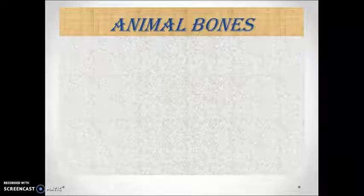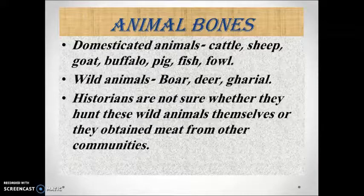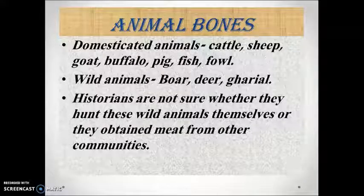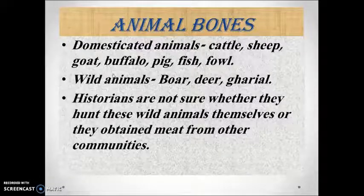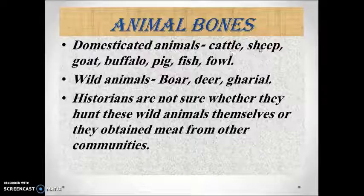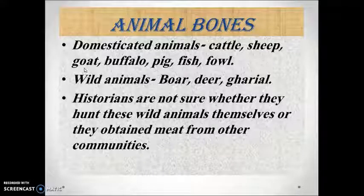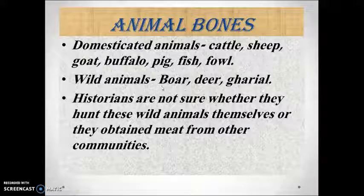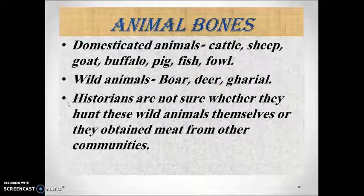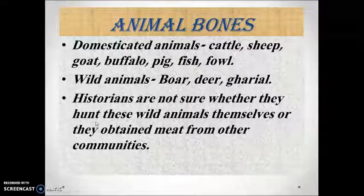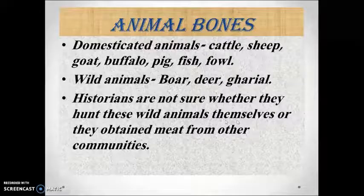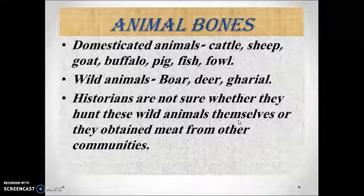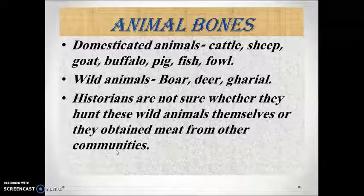On the basis of findings of animal bones, we can divide them into two broad categories: domesticated animals and wild animals. Under domesticated animals, we have findings of cattle, sheep, goat, buffalo, pig, fish, and fowl. Under wild animals, we have boar, deer, and gharial. Here is a contradiction — historians are not sure whether they hunted these wild animals themselves or obtained meat from other communities.